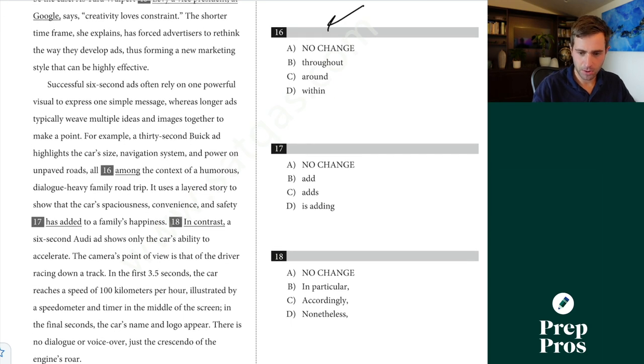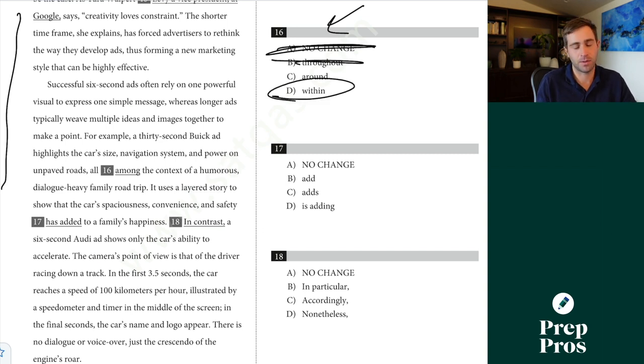So next up, looks like we just have a word choice question. So once again, let's skim through this part a little bit quickly. All right. For example, a 30-second Buick ad highlights the car's size, navigation system, and power on unpaved roads. All among the context doesn't work. This is a prepositional idiom question. All throughout doesn't make sense. You say all within the context of something. These idiom questions are things you kind of know or don't know.